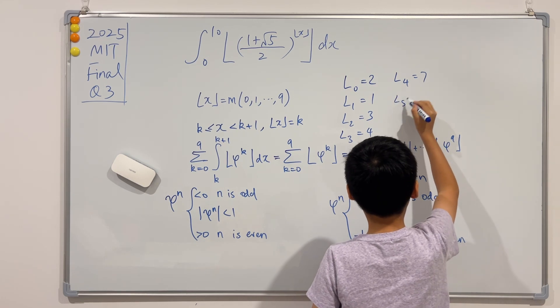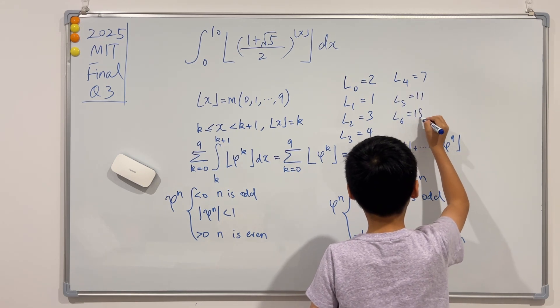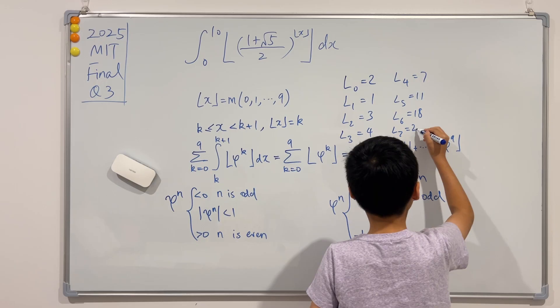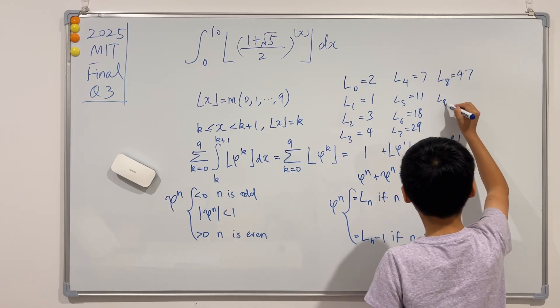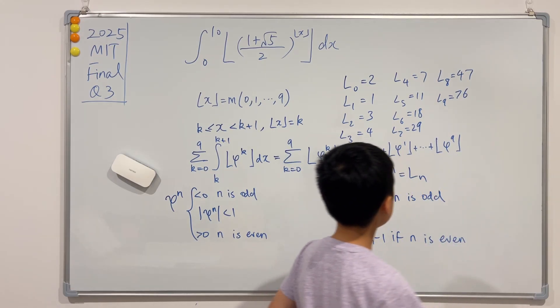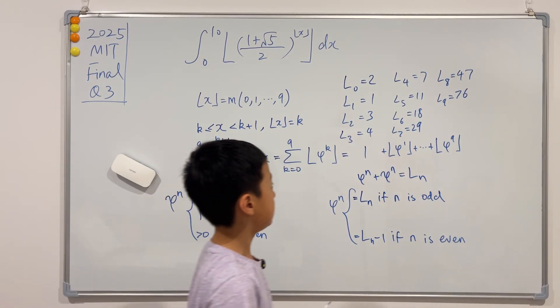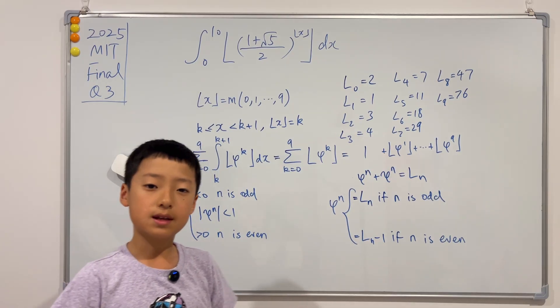Lucas of 6 is 18, Lucas of 7 is 29, Lucas of 8 is 47, Lucas of 9 is 76. Okay, so now that we have this, and I believe you can try this on your own, plug everything into here.